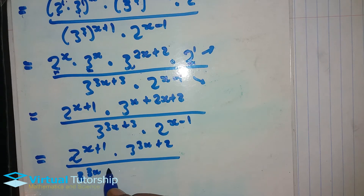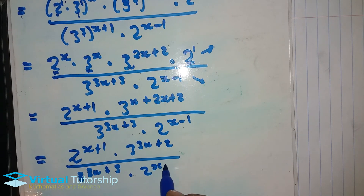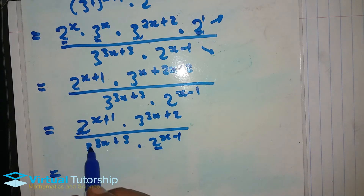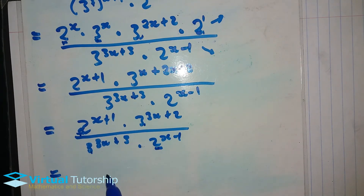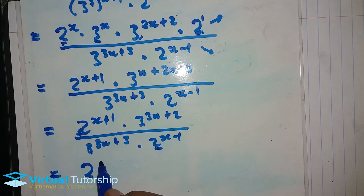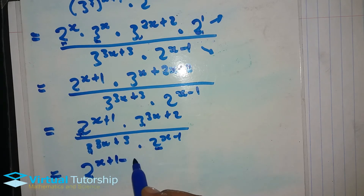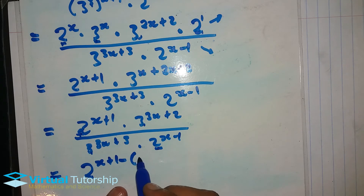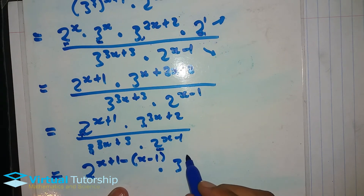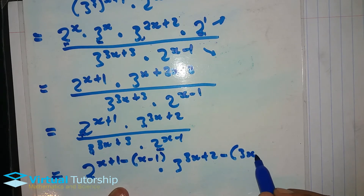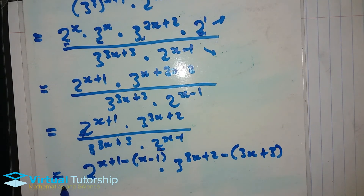So it's 3 to the 3x plus 3 times x minus 1. Next, divide the powers with the same base — for the 2s and the 3s — by subtracting exponents. For base 2: 2 to the x plus 1 minus, in brackets, x minus 1. Remember the negative sign affects both terms. For base 3: 3 to the 3x plus 2 minus open bracket 3x plus 3.